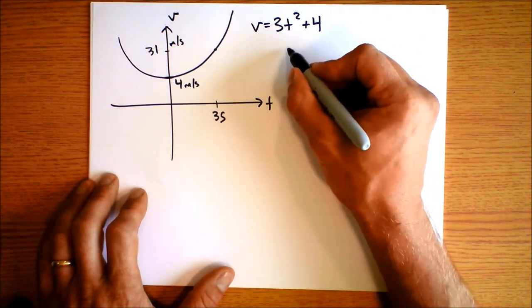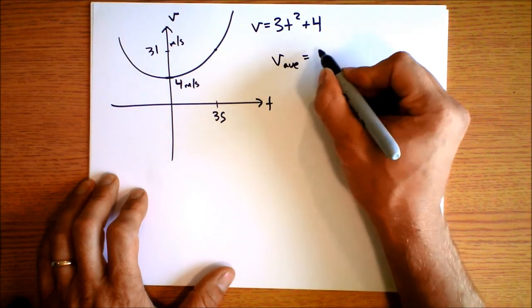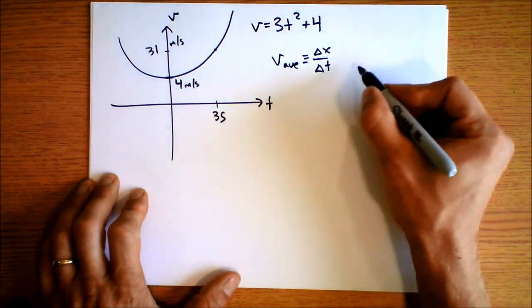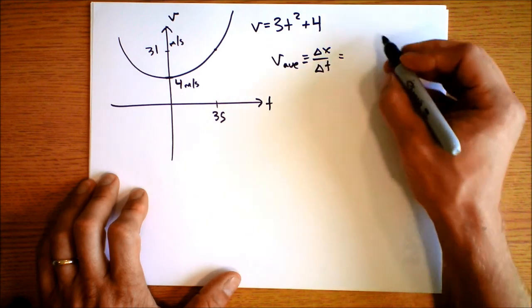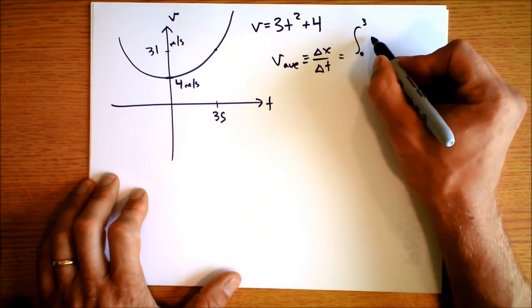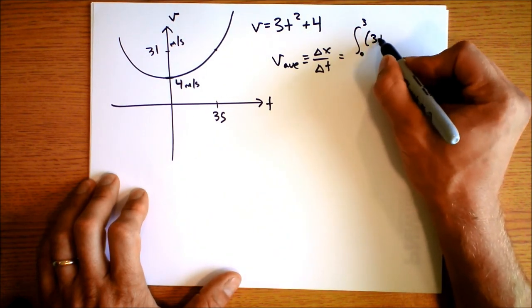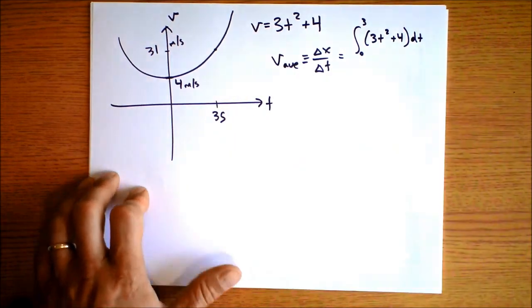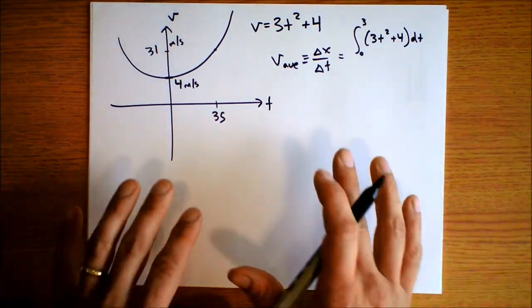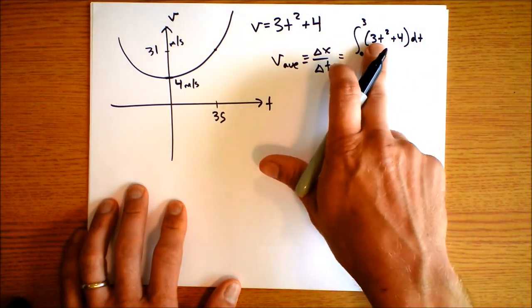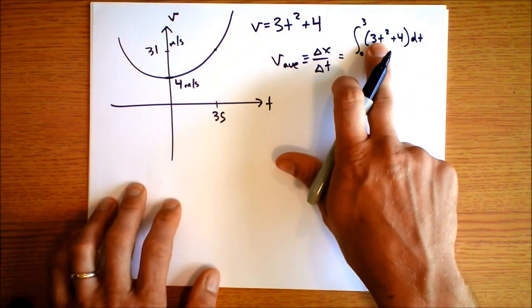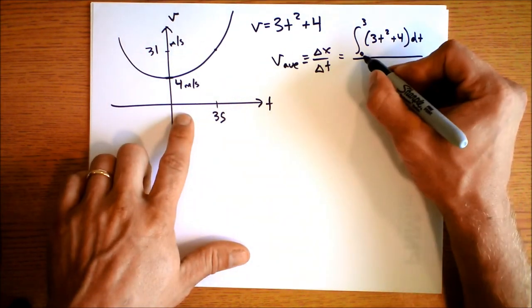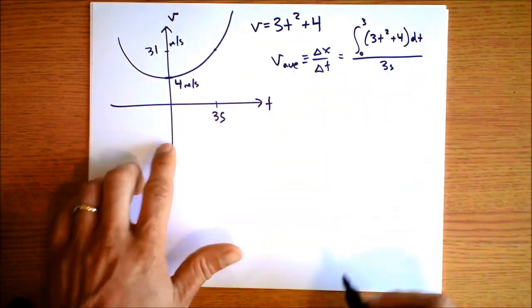So that's where this point is right here. Not exactly to scale, but let's see, this is 4 meters per second, 31 meters per second, 3 seconds. And I want to know what the average speed over this time is. So what I'll do is I'll take the V average is delta x over delta t. That's the definition of the average. And then I know that delta x is the integral. It's the integral between 0 and 3 of 3t squared plus 4 integrated over t. And then I have to divide that by the time interval. And the time interval is between 0 and 3, so I'm going to divide it by 3 seconds.